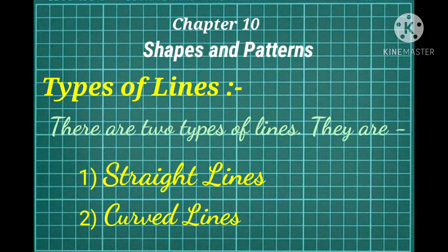From the top side, write down Chapter 10, Shapes and Patterns. Before proceeding with the chapter, let's study about types of lines. Children, there are mainly two types of lines. They are: first one is straight lines and the second one is curved lines.